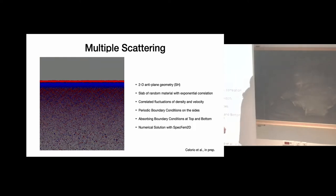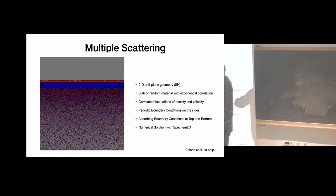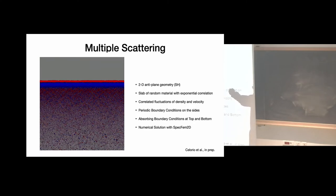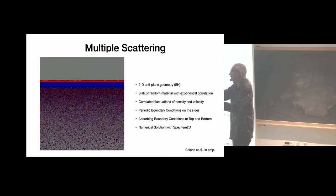The coherent field is the unscattered component. What produces the attenuation is the interference between the initial plane wave and the wave scattered in the forward direction — this is related to the celebrated optical theorem involving the scattering amplitude exactly in the forward direction. The interference between the forward-scattered wave and the incident plane wave produces what is called extinction or attenuation.